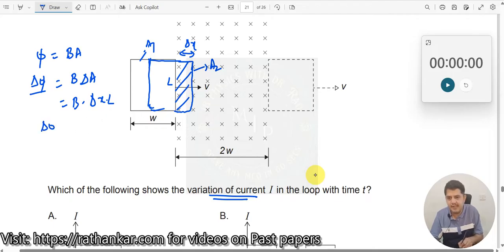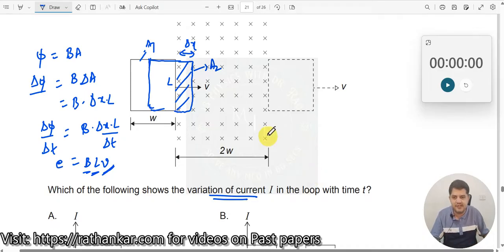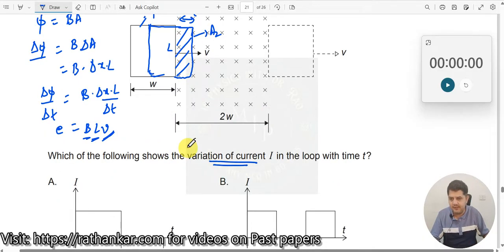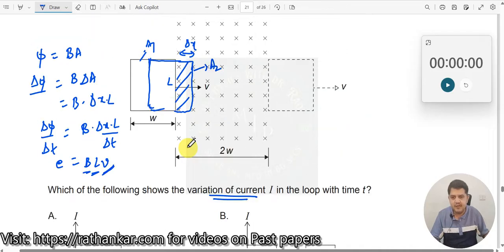I can now write this as B into delta x into L is the change in area. Delta phi divided by delta T will be B into delta x into L divided by delta T which will now be equal to BLV. Now, when this one starts moving, the delta x keeps on increasing uniformly. When it keeps on increasing uniformly, it means velocity is constant, length is constant, B is constant which means your EMF is also constant, BL into V. When your EMF is constant, E divided by R which is your current, induced current will also be a constant.